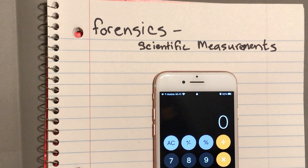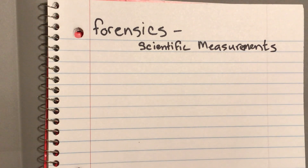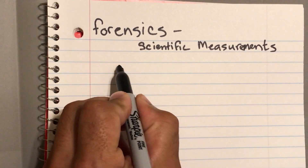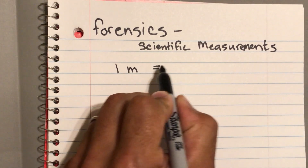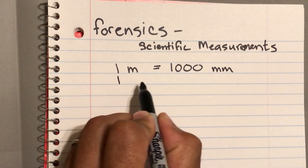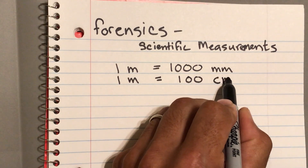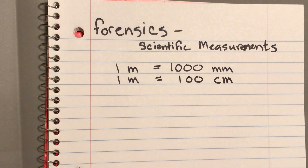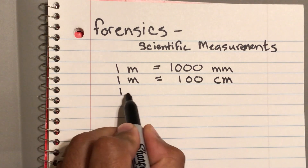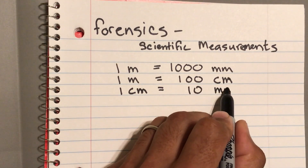For example, from the standard system to the metric system, or even within the metric system — how to convert from centimeters to millimeters or kilometers to meters. First we need some givens: one meter is equal to 1000 millimeters. One meter is also equal to 100 centimeters — that's what 'centi' means. One centimeter is equal to ten millimeters.